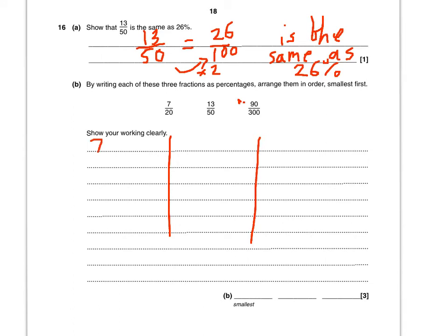7 over 20. How do I get 20 to 100? Times by 5. 7 times 5 is 35. Right. That's 35%.